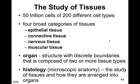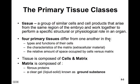Organs are structures with discrete boundaries that are composed of two or more different tissue types. Histology is the microscopic anatomy of those tissues — the study of tissues and how they are arranged into organs. A tissue is a group of similar cells and cell products that arise from the same region of the embryo and work together to perform a specific structural or physiological role in an organ.